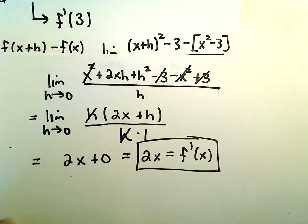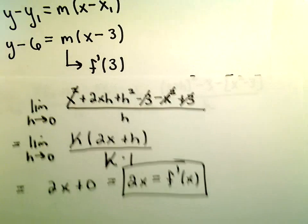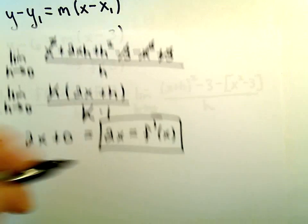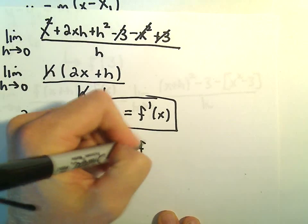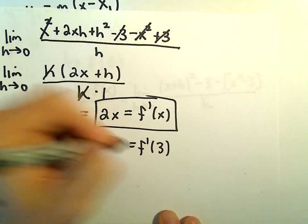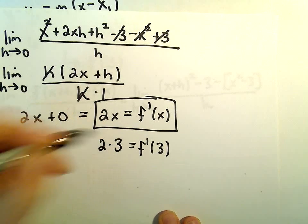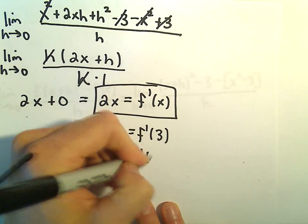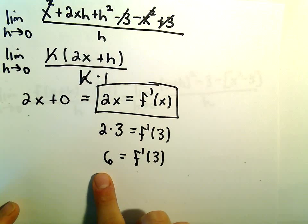So again, the only thing that we were missing was we said we had to take the derivative and plug in the value of 3 to get the slope of the tangent line. If we plug in 3 into our derivative, we'll get 2 times 3. And 2 times 3 is just 6. So the derivative evaluated at 3 is 6.